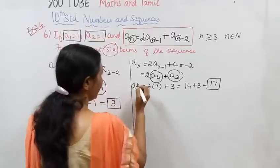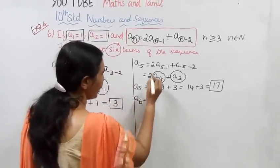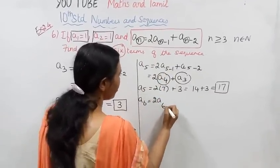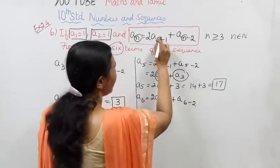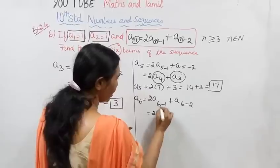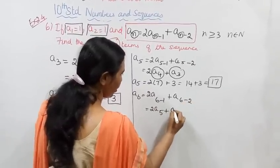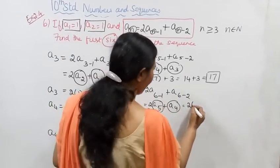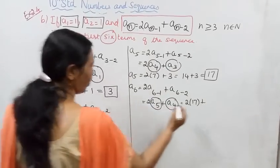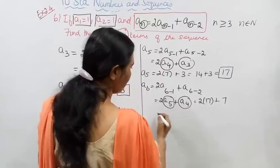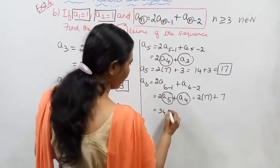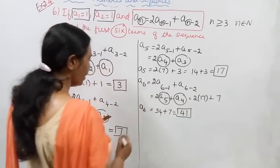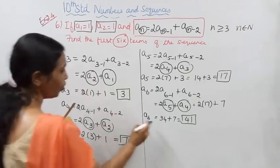A6 equals 2·A5 plus A4. Substituting: A5 is 17, A4 is 7. 2 into 17 is 34, and 34 plus 7 is 41. So A6 value is 41.